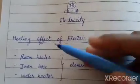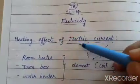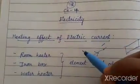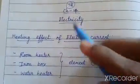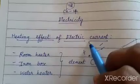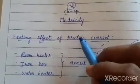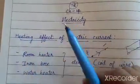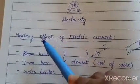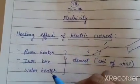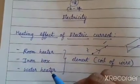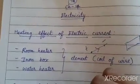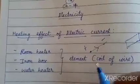Today we are moving to the next topic: the heating effect of electric current. What does the heading tell us? Heating effect of electric current means when electricity is passed, heat is produced. How come heat is produced by passing electricity? Is it beneficial to human beings? Let us see that today.